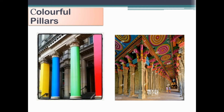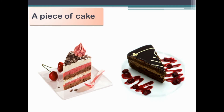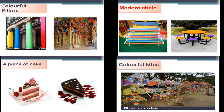For our man-made objects, we have four examples. The first one is colorful pillars — it appears more harmonious with good positioning of each pillar, even though it has alternate colors. Next is a modern chair, which has a rhythm of color and rhythm of shape. A piece of cake shows a rhythm of colors representing the flavors. Lastly, colorful kites have both rhythm of color and rhythm of shape.